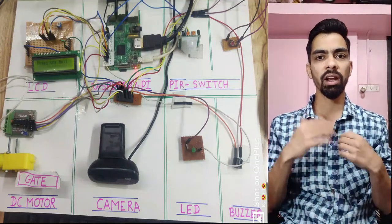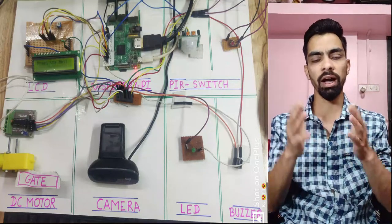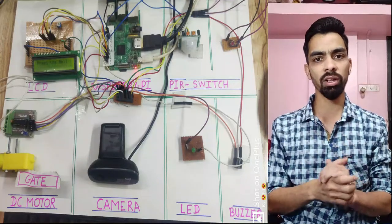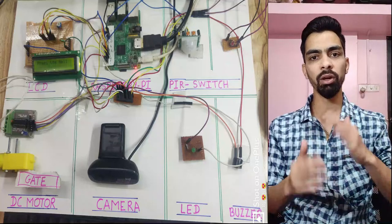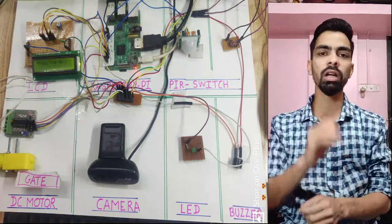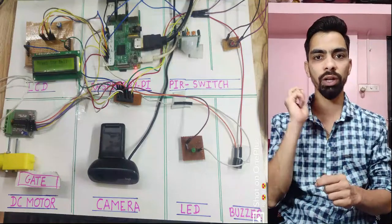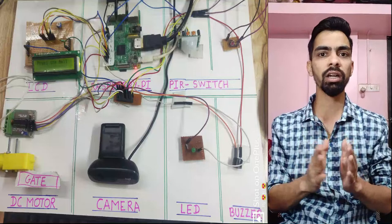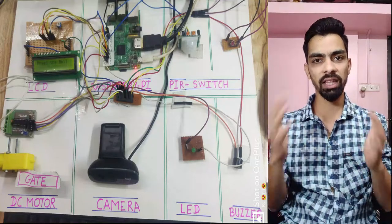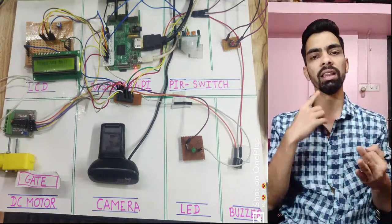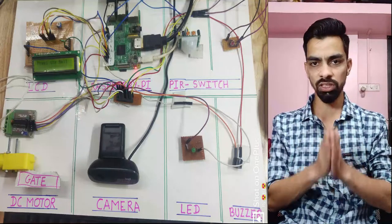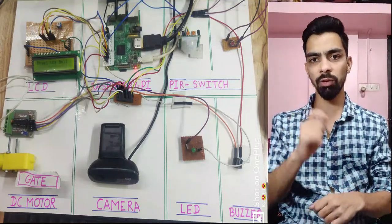The third part of the project flow: if a known person — like a family member — presses the bell, the camera opens and checks whether the person is known. If the person is known, the door will automatically open and then close. So this is the complete idea behind this project. Now we will see a practical demonstration so you understand how it works before moving on to the hardware connection and programming parts.